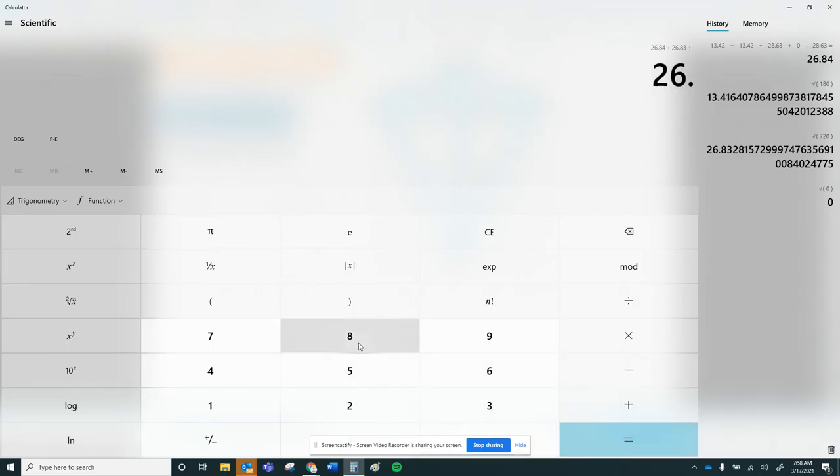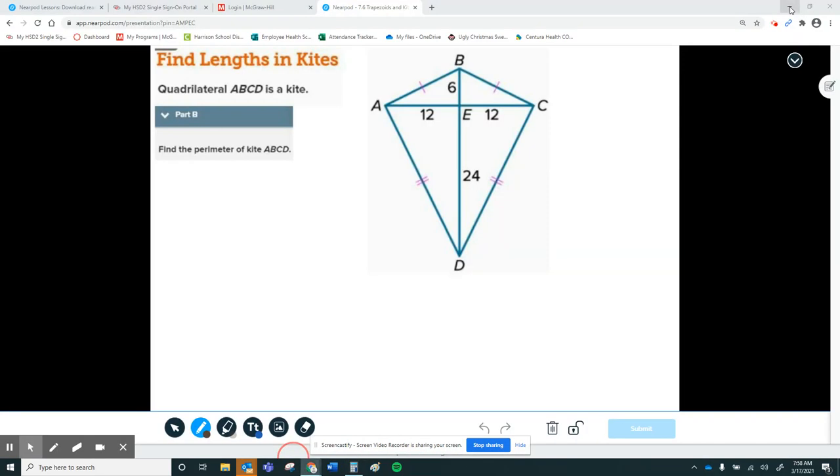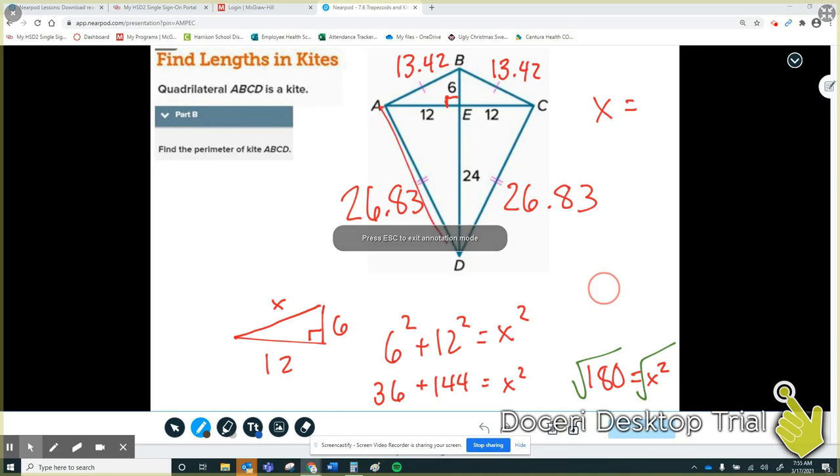Now I need to add my 26.83 plus 26.83, and I get approximately 80.5. So the perimeter, if I add all four of these sides, is approximately 80.5, whatever units they were using.